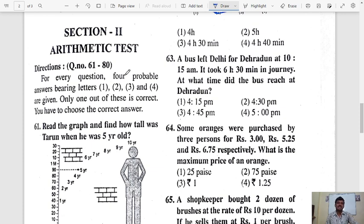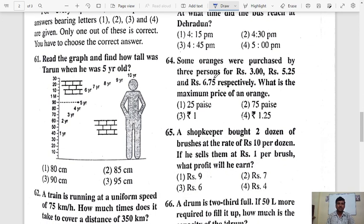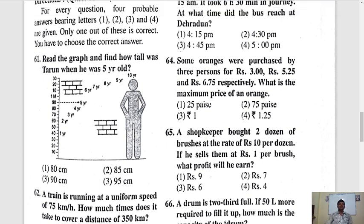Section 2, Arithmetic Test. I will read the directions. Question number 61 to 80. For every question 4 probable answer bearing letters 1, 2, 3, 4 are given. Only one of these is correct. You have to choose the correct answer. So they gave 4 answers, but in that 4 answers only 1 answer will be correct. We have to find out the correct answer.